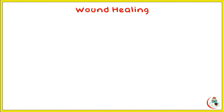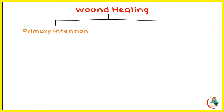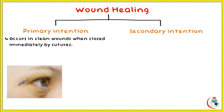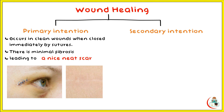It is important to know how wounds heal and what the types of wound healing are. A wound can be healed by primary intention or by secondary intention. Healing by primary intention occurs in clean wounds when closed immediately by sutures or other means like staples. There is minimal fibrosis, leading to a neat scar which is linear, flat with the surface, with the same color as the surrounding skin and no stitch marks.